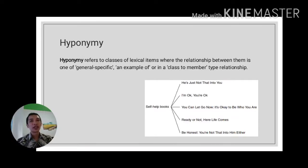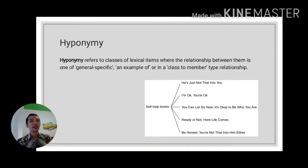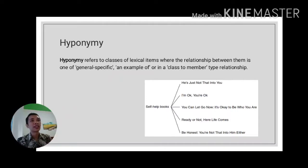An author can also keep the cohesion of a text by using hyponymy. Hyponymy refers to classes of lexical items where the relationship is one of general-to-specific, or a class-to-member type relationship. For example, when we talk about 'tree,' the hyponyms are oak tree, coconut tree, palm tree, mango tree, and many others. These are all examples of a tree, so talking about something more specific is still linked to the broader concept.